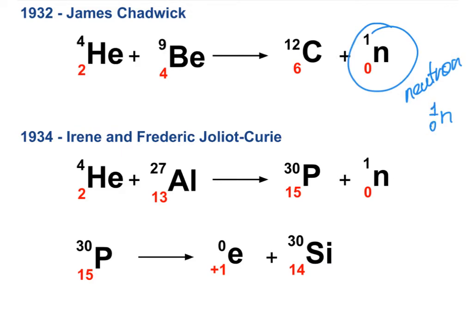Two years later, Irène and Frédéric Joliot-Curie shot alpha particles into aluminum-27 and transmuted it into phosphorus-30, with a neutron also ejected. What is important is that stable aluminum-27 transmuted into unstable phosphorus-30. Phosphorus-30 is unstable and will decay through positron decay into silicon-30. So through this artificial transmutation, a stable isotope was converted into an unstable, radioactive one — that is what artificial transmutation is all about.